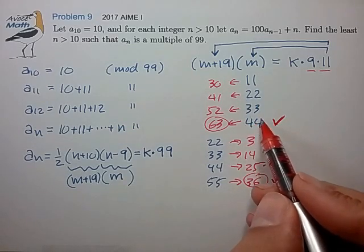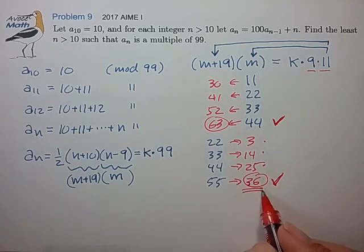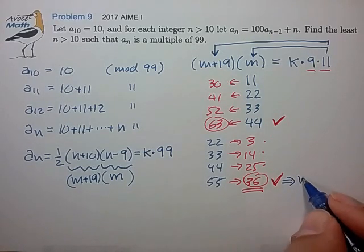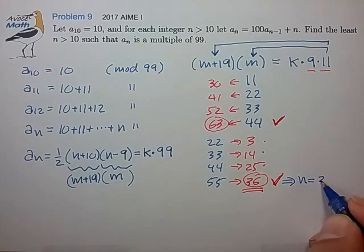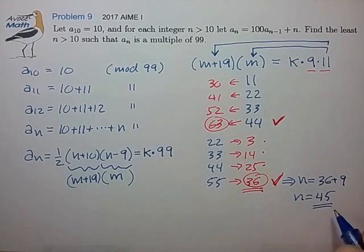In this case m equals 44, in this case m equals 36. This is the lower of the two numbers, so m of 36 implies that n is equal to 36 plus 9, so n equals 45, and that's our final answer. Hope that helps, and we'll see you at the next video. Take care, bye bye.